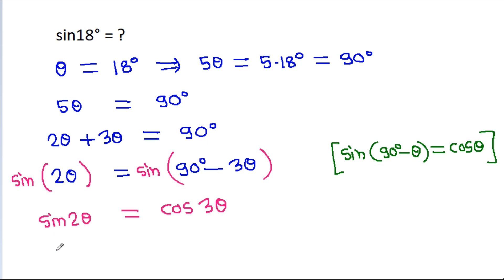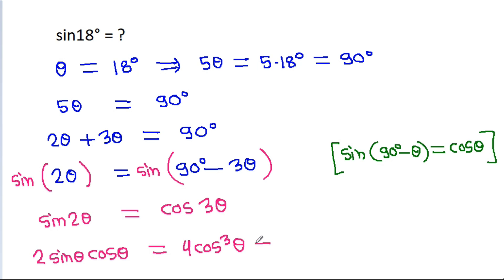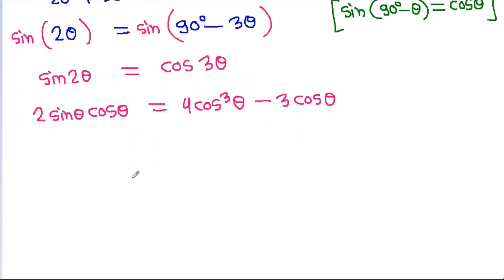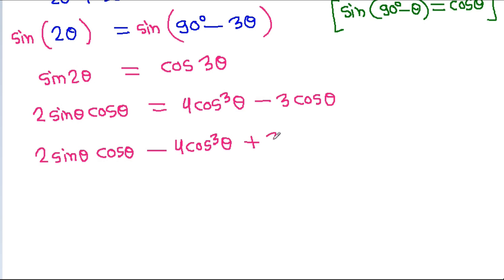And sin 2θ is 2 sinθ cosθ, and it is equal to cos 3θ, which is 4cos³θ minus 3cosθ. So we have 2sinθ cosθ minus 4cos³θ plus 3cosθ is equal to 0.